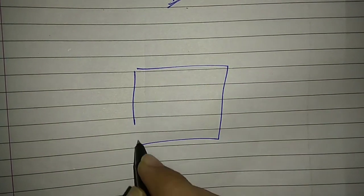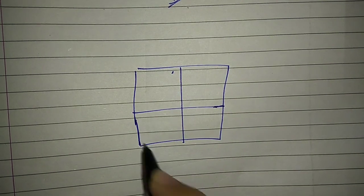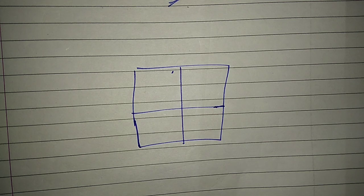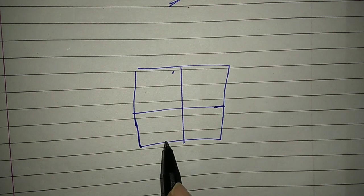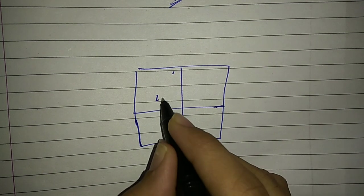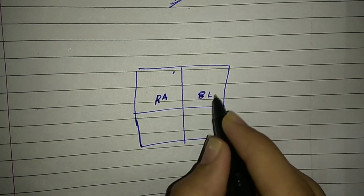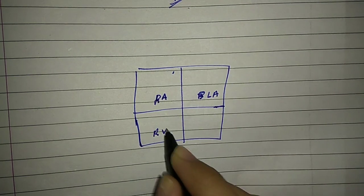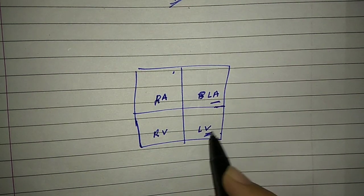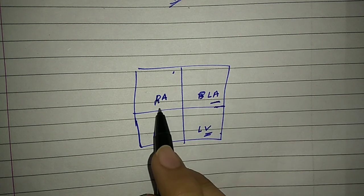So here we have our heart. In the last video lecture we had a diagram of the heart, and here we have a double circulation diagram. We have four chambers: right atrium, left atrium, right ventricle, and left ventricle. This is like a patient's heart, so the patient's left is here and this is the right.